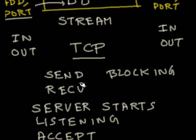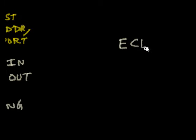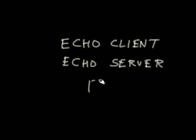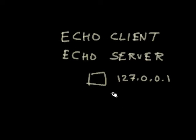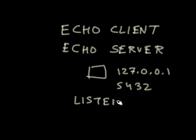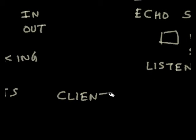Our program will be a simple echo client and echo server. What it does is very simple — the server starts at localhost, 127.0.0.1, and starts at a port number you specify, let's say 5432. It is now in listening mode.